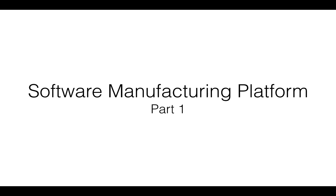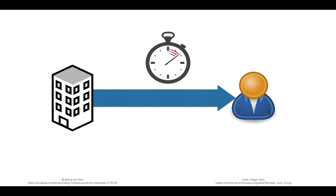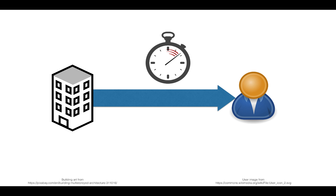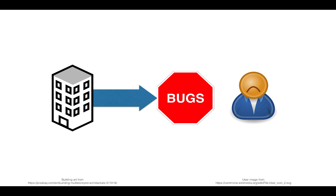In today's hyper-competitive climate, businesses must rapidly deliver applications and features to stay competitive. As an author by the name of Hitton Shah put it, you don't win by getting there first or having the best idea — you win by continually solving the problem better. When you build a feature that is extremely popular or successful, the competition will steal it. However, if businesses don't temper speed with a focus on quality, they end up defeating the purpose of going faster, because as quality deteriorates, businesses end up using their resources on fixing internal issues rather than identifying and solving customer problems.